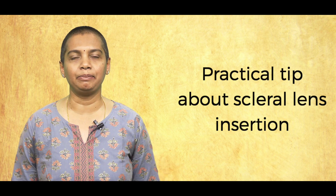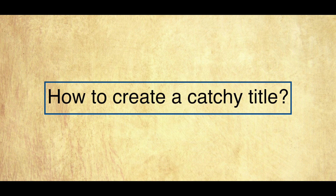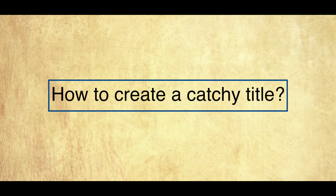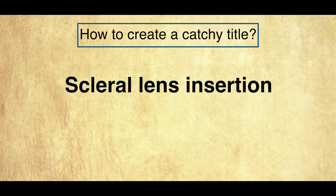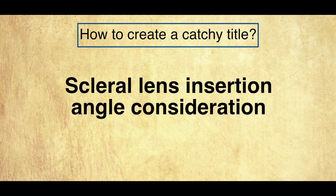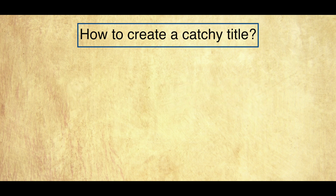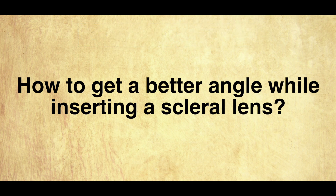Let's learn the steps. The first step is to create a catchy and suitable title for this pearl. My initial title was 'scleral lens insertion.' I modified it to 'scleral lens insertion angle consideration,' then improved it further by making it a question: 'How do we get a better angle while inserting a scleral lens?' This sounds much more catchy.